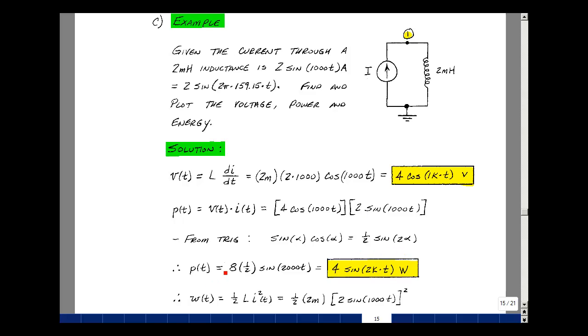In the previous case here, we've got 8 times sine and cosine multiplied, but now we'll have 1/2 sine of twice the argument, which would be 2,000t. So I have 4 sine of 2kT watts.